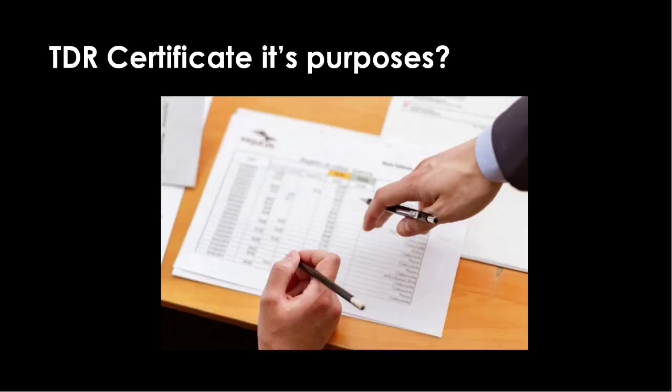TDR Certificates and their Purposes: An important raw material which builders use to develop an area beyond the permissible Floor Space Index. TDR are obtained in the form of certificates which the owners can subsequently use for themselves or can trade in the form of TDR certificates for cash. The main purpose of this concept is that developers purchase the TDR certificates available in the market and utilize them for increasing their permissible development rights.